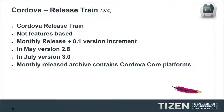The Cordova release stream increments the versioning by .1 each month, so it is not feature-based. The community is working on having features ready, with a goal of delivering Cordova 3 in July. In May we will have version 2.8 at the end of the month, and in July version 3.